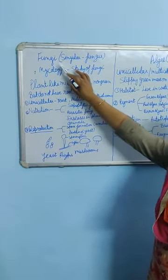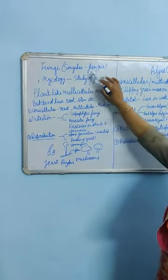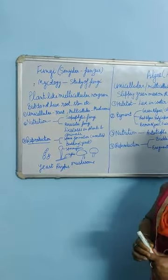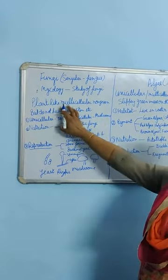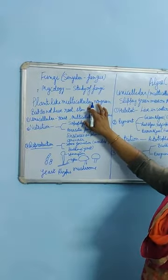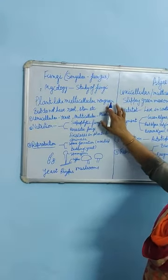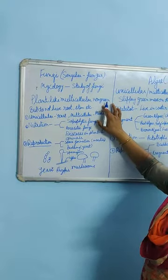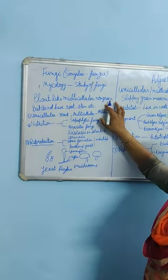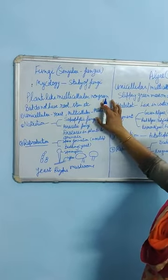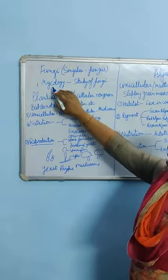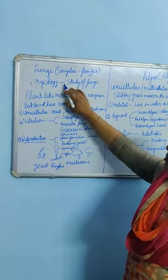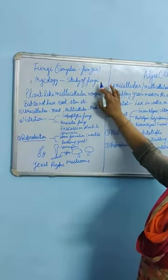Fungi is plural; the singular of fungi is fungus. These are thread-like structures — they look like plants, and most of them are multicellular, but they are non-green. They do not have chlorophyll in them, which is why they are not autotrophs and cannot prepare their own food. The study of fungi has a special branch known as mycology — it is the branch of science in which we study about fungi.